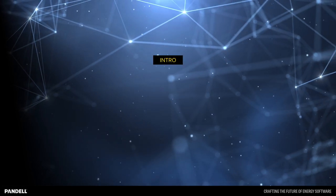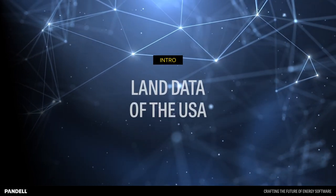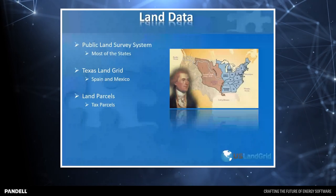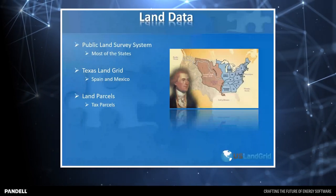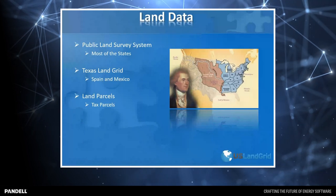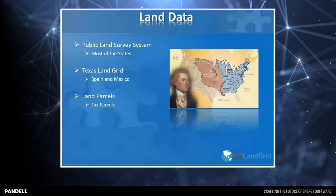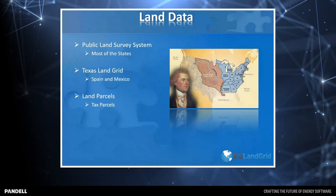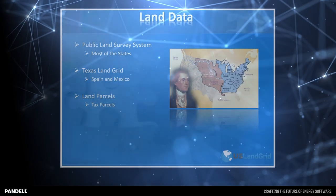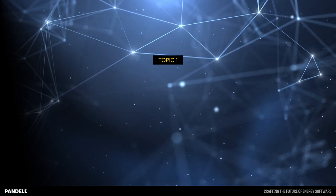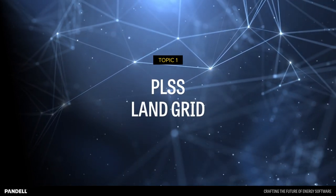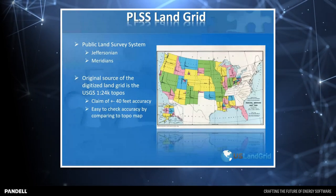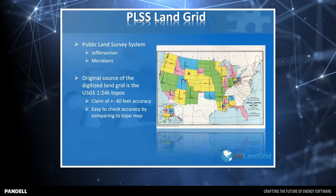Today we're going to cover land data of the United States — it is US-centric when it comes to USLandGrid. We're going to cover the public land survey system, which covers most states — all states minus the original 13 colonies and minus Texas. Then we're going to talk about the Texas land grid and the history behind it, how Spain and Mexico play a big part in that land grid. And then we're going to talk about land parcels or tax parcels across the continental United States.